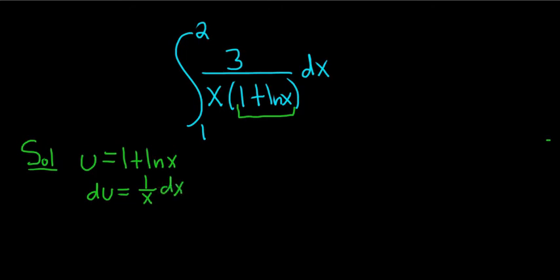We're missing a 3 here. So it would be nice if we could make this look like what's up here. So I'll go ahead and multiply both sides by 3, so we have 3 over x dx.